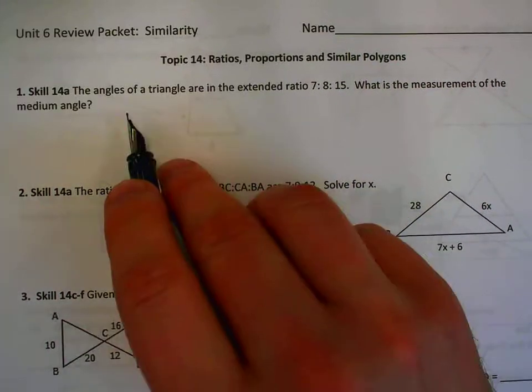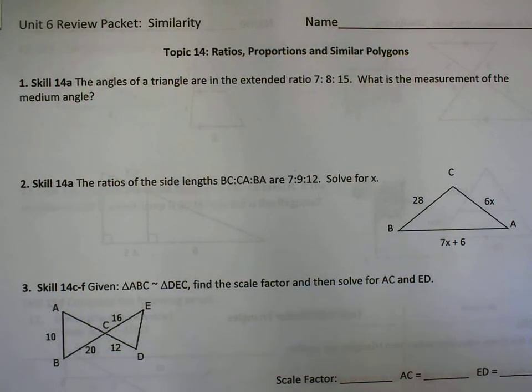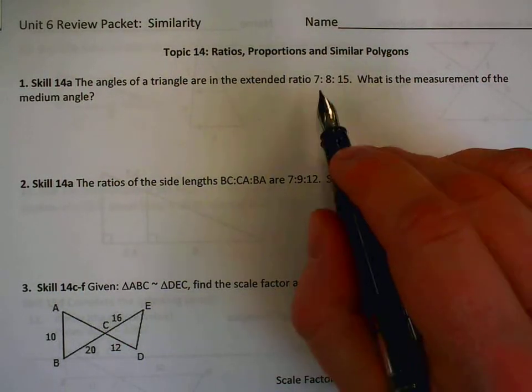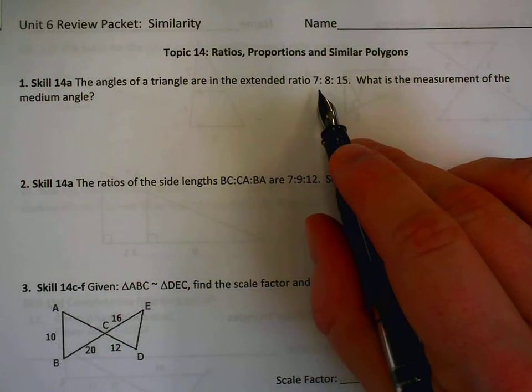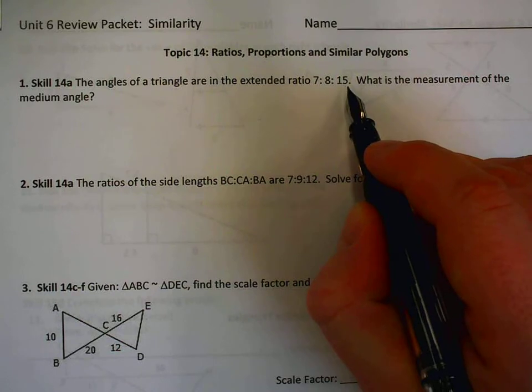In the first part, we're going to address topic 14. Question number one: The angles of a triangle are in the extended ratio 7 to 8 to 15. What is the measurement of the medium angle? Whenever we see an extended ratio or a ratio comparing parts of shapes, we can express them as something like 7x, 8x, and 15x.